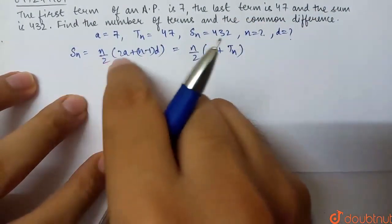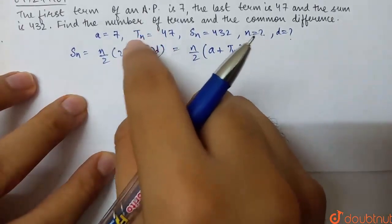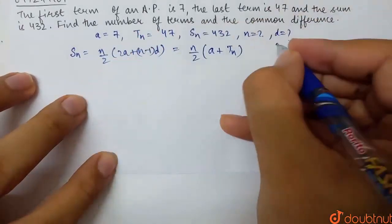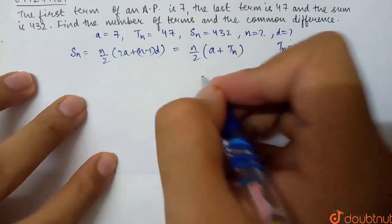This A plus N minus 1 into D is basically TN. The AP has a basic formula that TN equals A plus N minus 1 into D. This we can substitute.